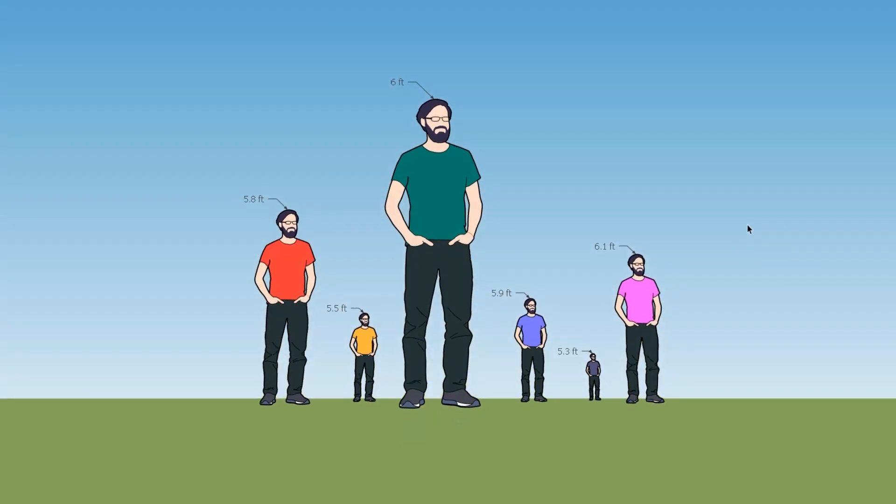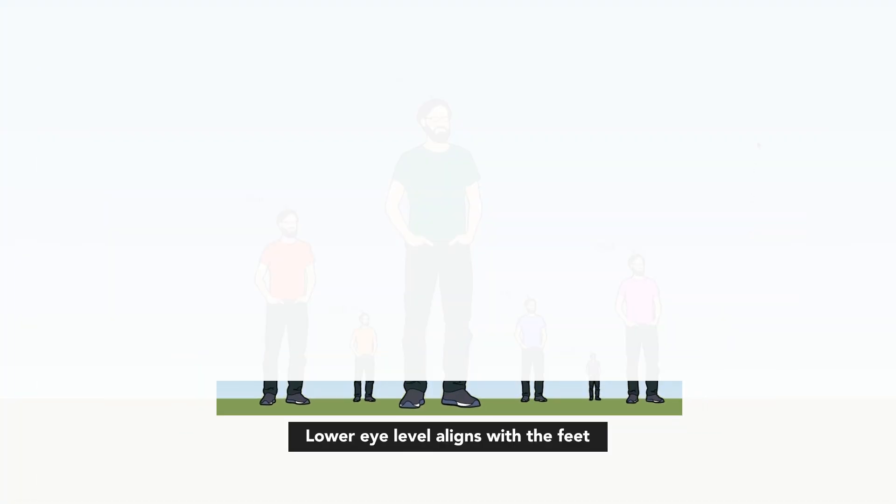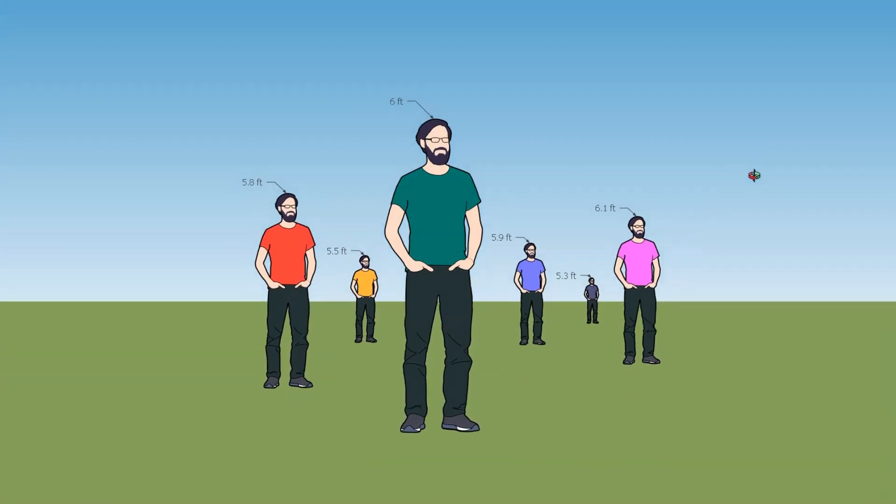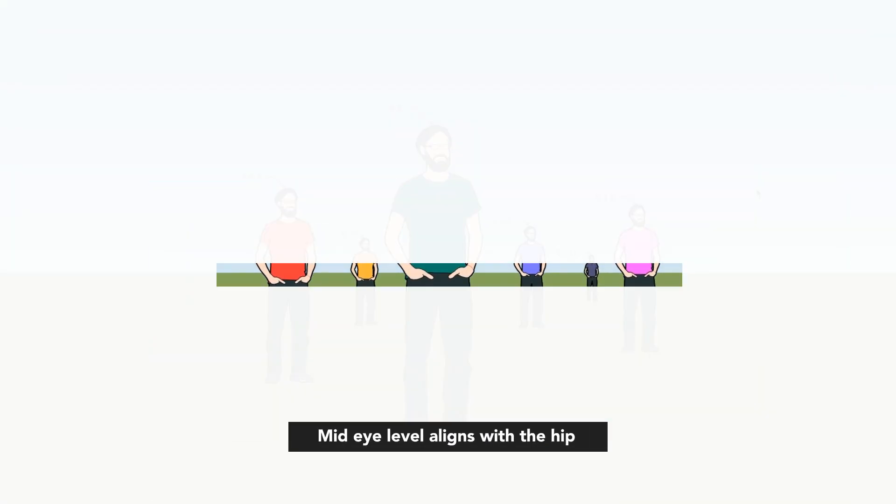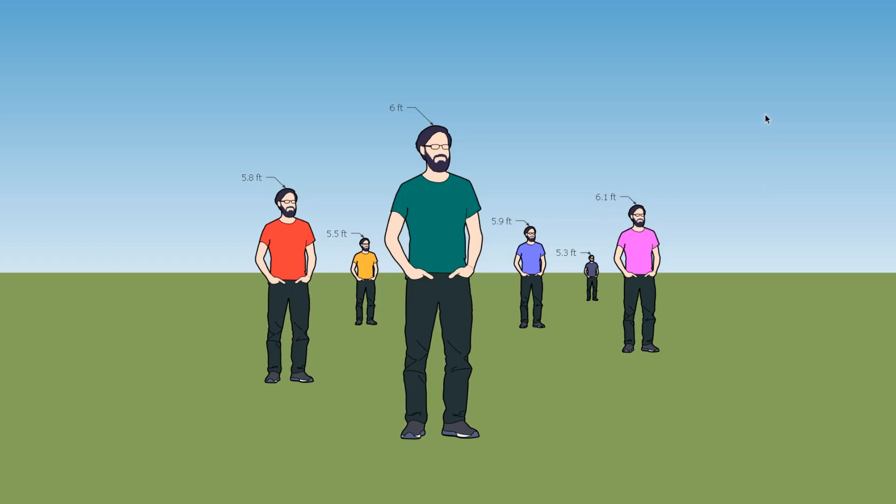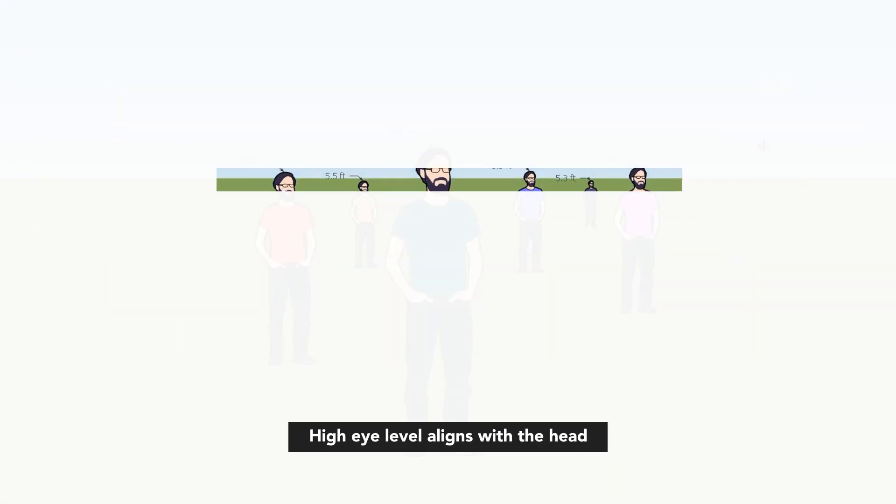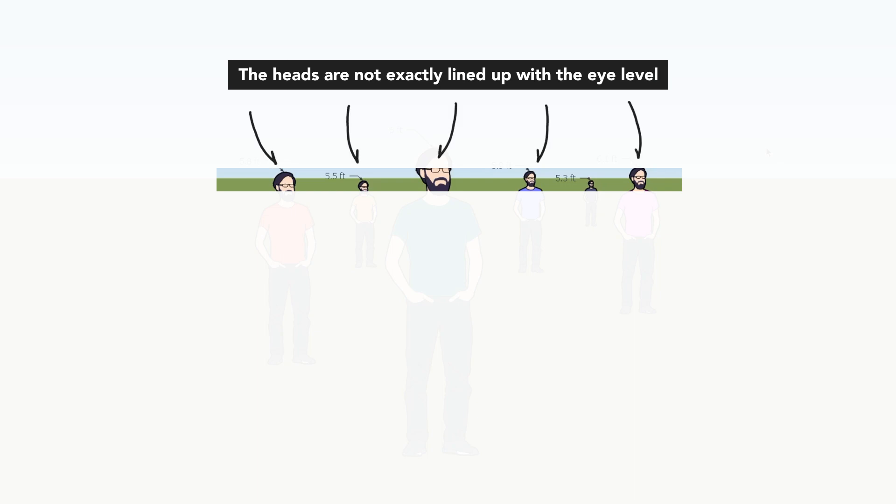When the eye level is low, it should be level with the feet. When the eye level is in the middle, it should be level with the torso or the hip. When the eye level is high, it should be level with the head. But notice how the eye level is not exactly lined up with all the heads of the models.